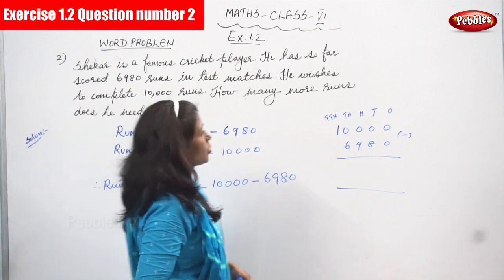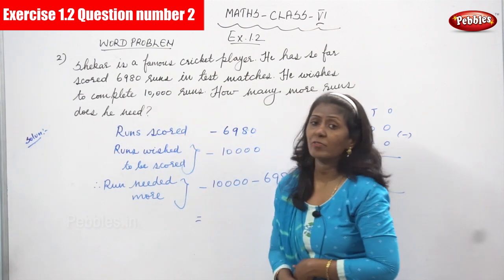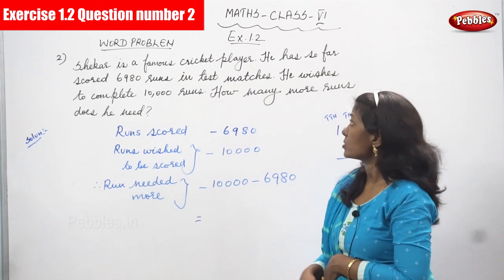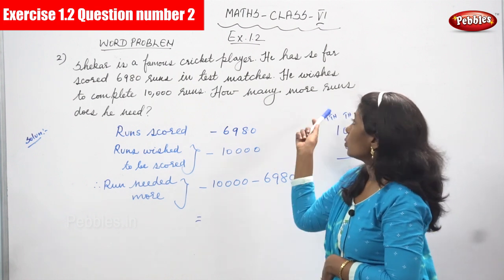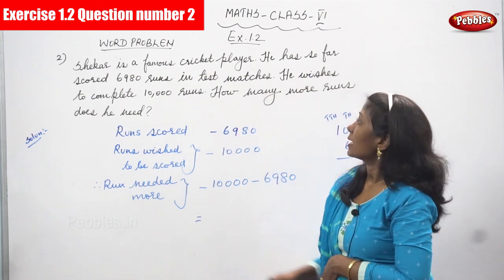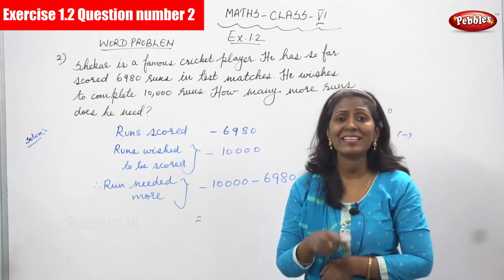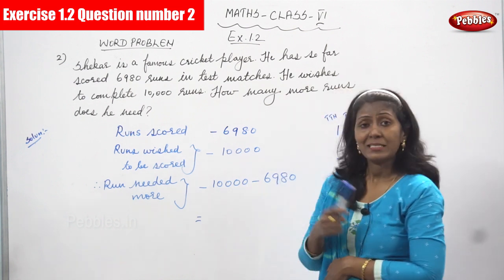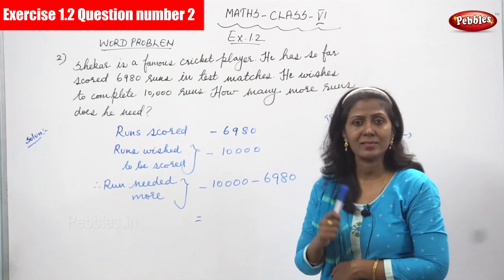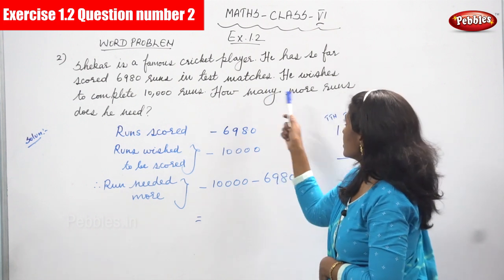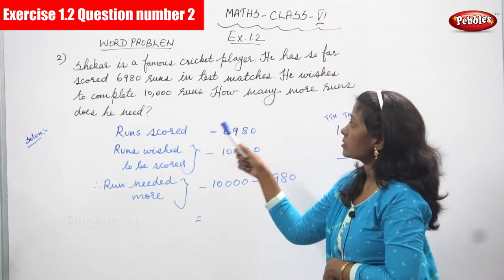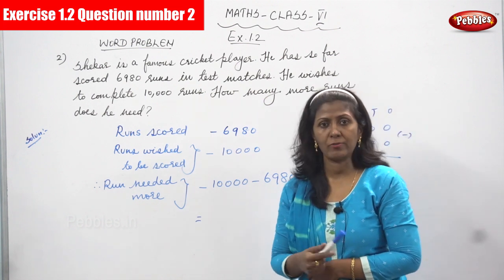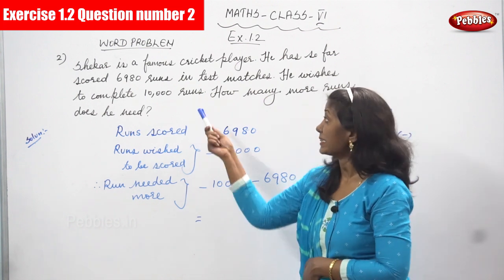Shaker is a famous cricket player — that is the name of the person. He has so far scored 6,980 runs in test matches. He wishes to be scored 10,000 runs. So runs wished to be scored is 10,000.